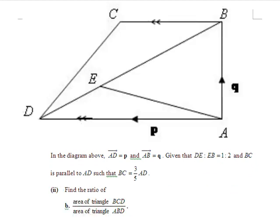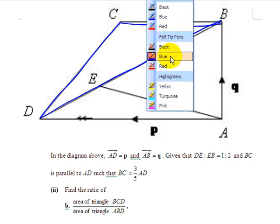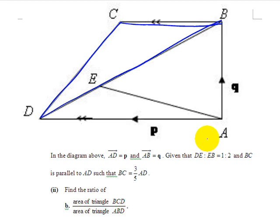Now, let's move on to part B of this question. Find the ratio of area triangle BCD and ABD.